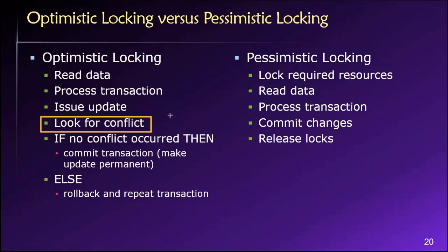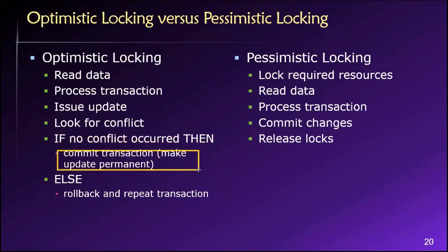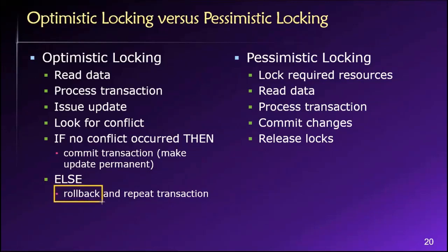We want the changes to be consistent with our expectations, so we look to see if a conflict occurred. If no conflict occurred, we commit the transaction. Otherwise, if a conflict did occur — meaning somebody else changed the data we're working with before we were able to commit — then we have to roll back our changes and repeat. We go back and start over because something happened before we were able to save our changes.